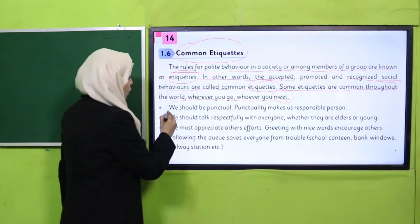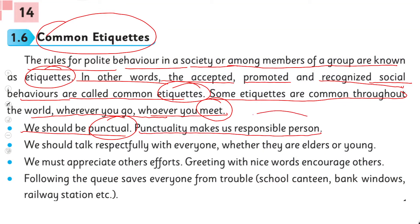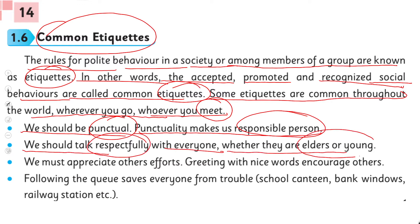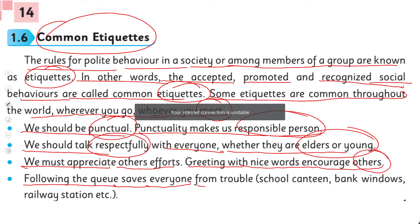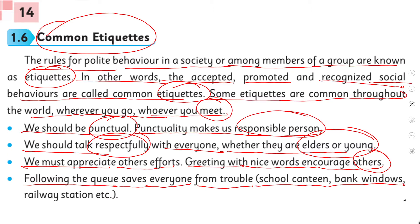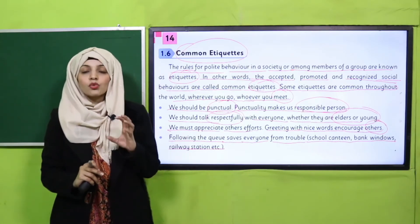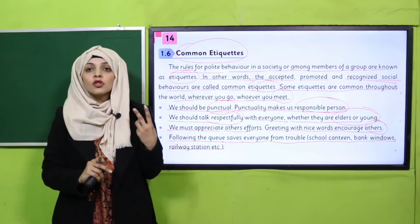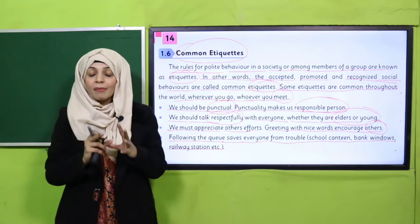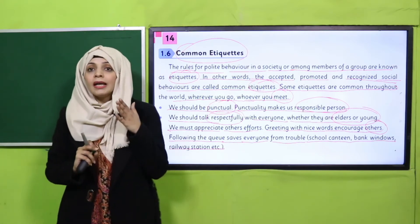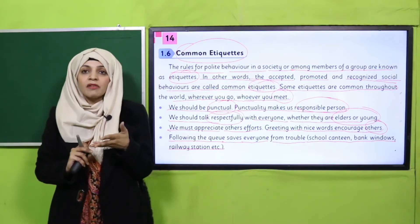Let's have a look at some common etiquettes. We should be punctual — punctuality makes us a responsible person. We should talk respectfully with everyone, whether they are elders or young. We must appreciate others' efforts, greet with nice words, and encourage others. Following the queue saves everyone from trouble — at school canteens, bank windows, railway stations, etc.